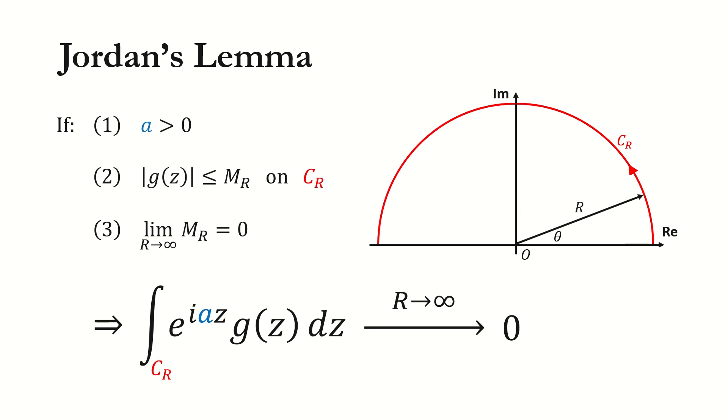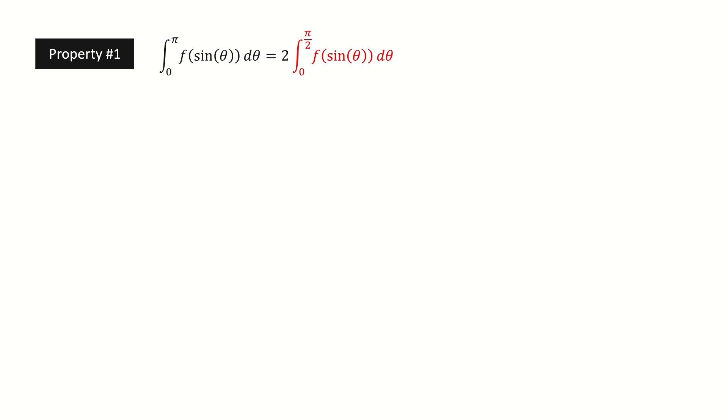So let's get started. Before we prove this lemma, we need to show two properties, and we will use them later. Here is property number 1. We want to show this integral is equal to twice this red color integral, and f is an arbitrary function that only depends on sine theta.